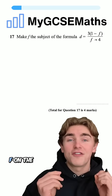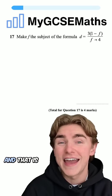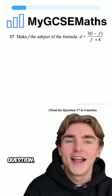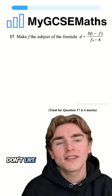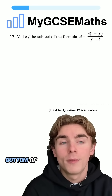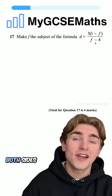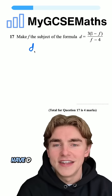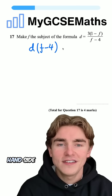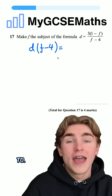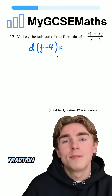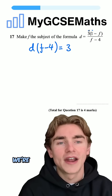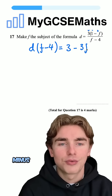We can see that we have an f on the top and the bottom of our fraction, and that is a key hint that we're going to have to factorize towards the end of the question. Step one: we don't like the fact that we have an f on the bottom of our fraction, so we're going to multiply both sides by f minus four to get rid of it. On the left-hand side we get d times f minus four, and on the right we expand the numerator: three times one is three, and three times minus f is minus three f.